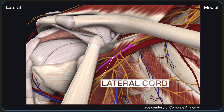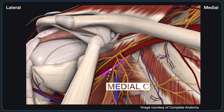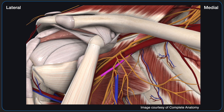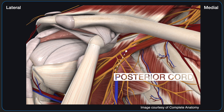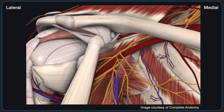The cords include the lateral cord, medial cord, and the posterior cord, which is seen with the axillary artery faded. The spatial orientation of the cords around the axillary artery changes as they travel distally from the costoclavicular space to the coracoid process.